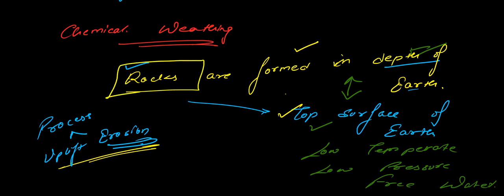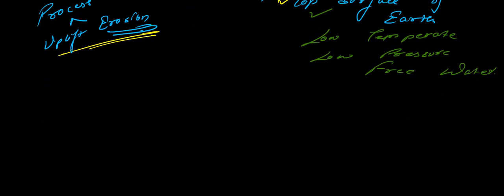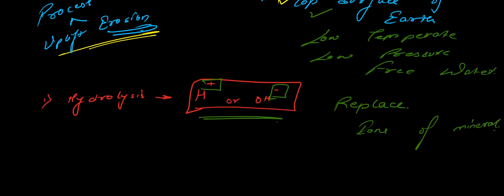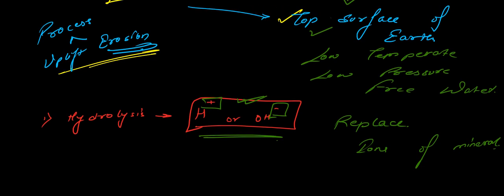There are different types of reactions. The first is hydrolysis — by the name you can say this is basically dependent on water. As you may have read in chemistry, we have H+ or OH- ions. These hydrogen particles basically replace the original ions of the minerals. These ions are more stable on the top surface of the earth due to the different chemical conditions, so hydrolysis takes place when rocks come up to the surface.